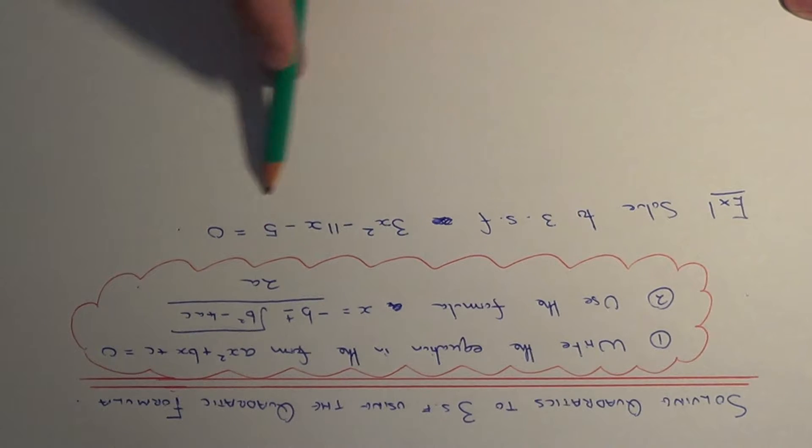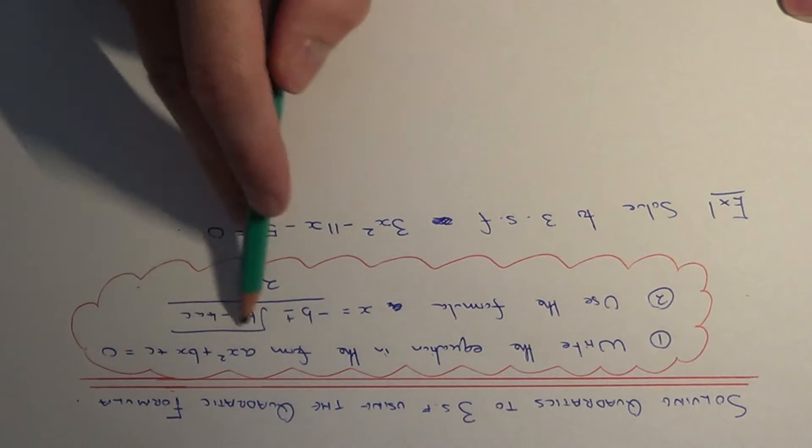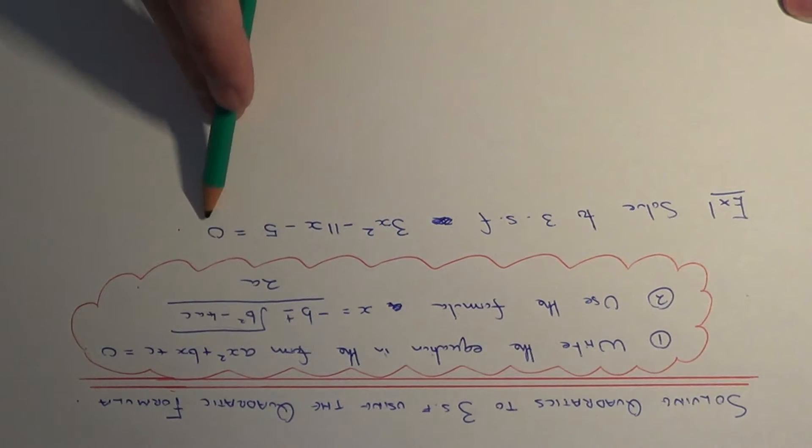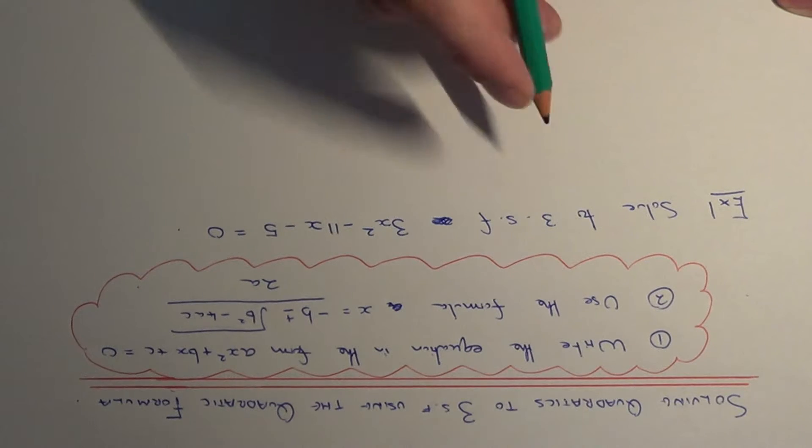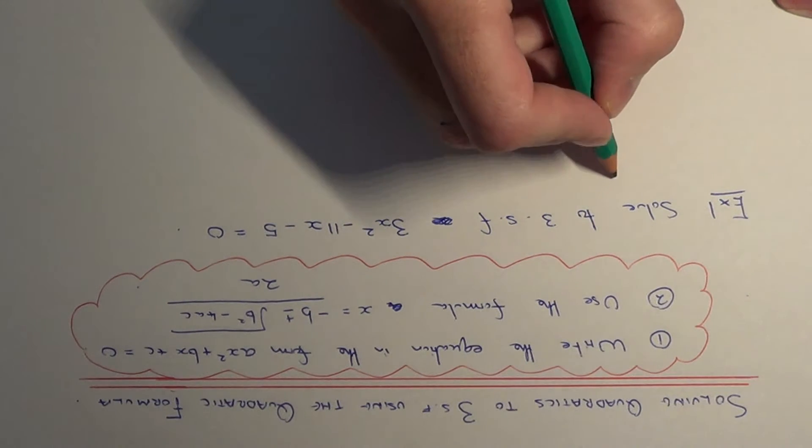This quadratic is already written in the required format, so it's all equal to zero. Let's write down our values of a, b, and c to start off with.